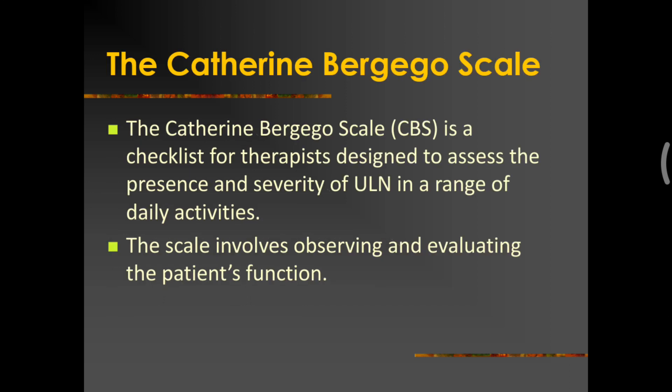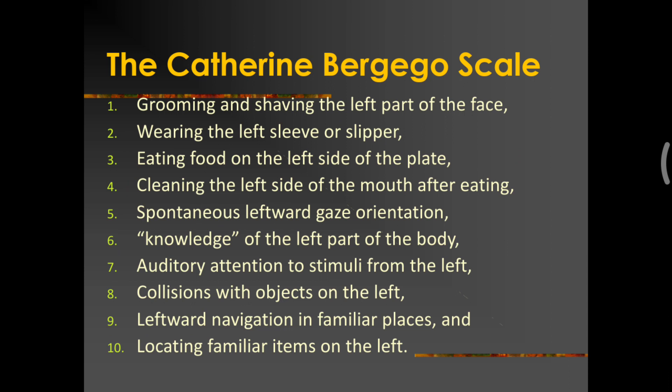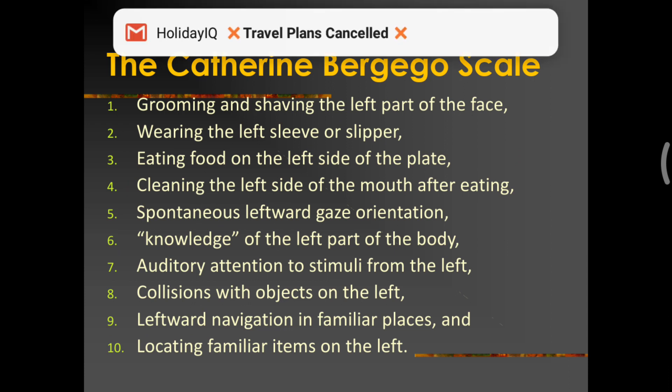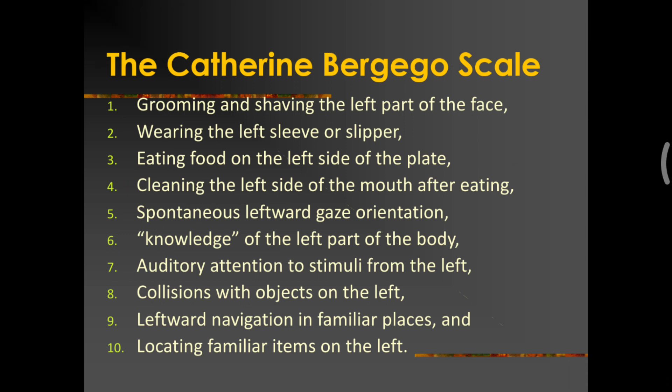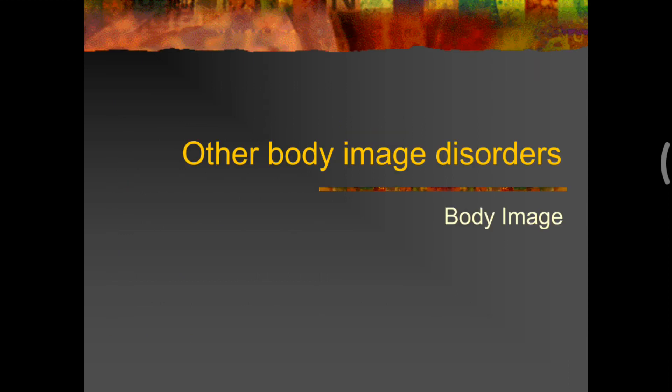The next tool is a Catherine Bergago scale. This is a checklist for therapists and it is designed to assess the presence and severity of unilateral neglect in a range of daily activities. The scale involves observing as well as evaluating the patient's function. Now, these are some of the items which are there in the Catherine Bergago scale. We observe a person how he grooms, how he shaves, how he wears the left sleeve of his dress, how he eats food normally, etc. And we ask the person to perform different ideal activities. We observe him and then we score whether he is having a problem in that area or not.